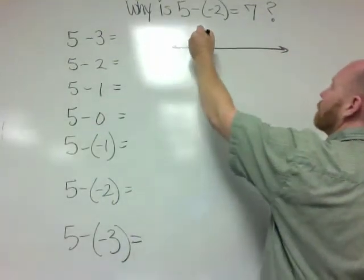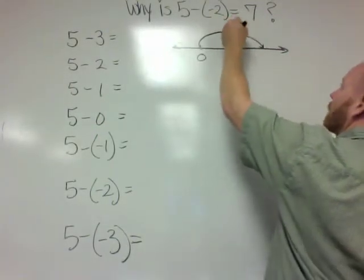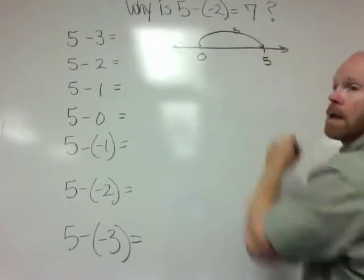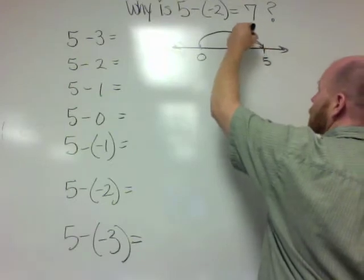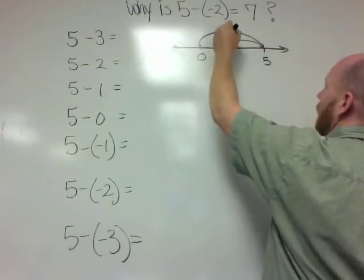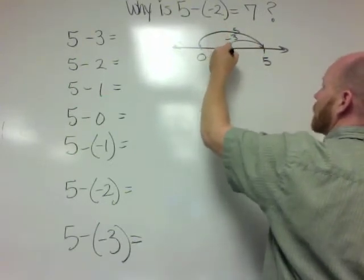5 means go 5 units to the right, and that puts you at 5. And then minus 3 means go backwards 3 units, and that places you at 2.